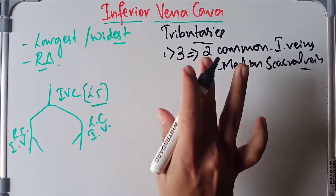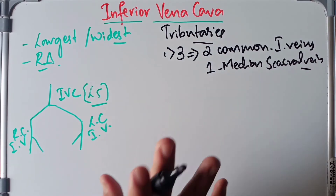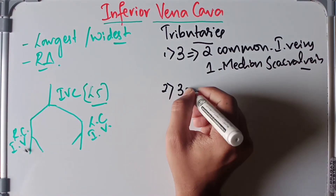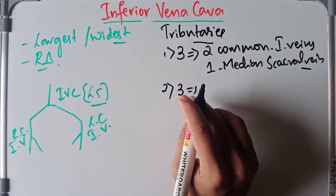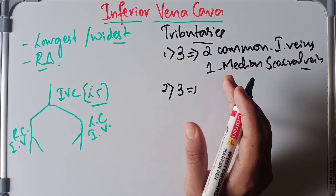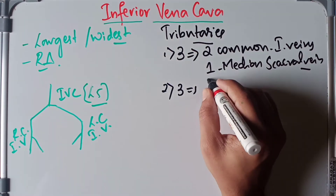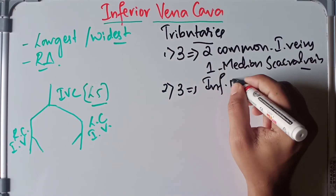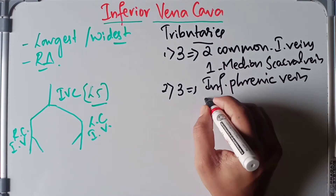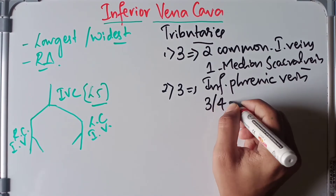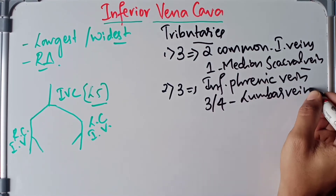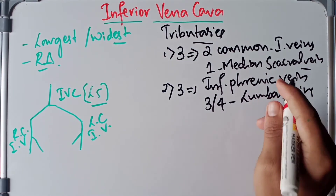Next we have three abdominal wall tributaries: they are the inferior phrenic vein and the third and fourth lumbar veins.